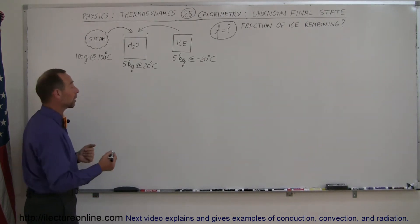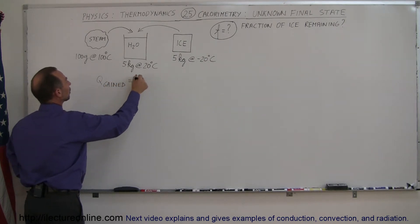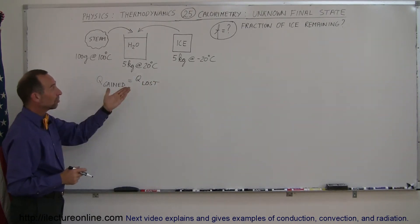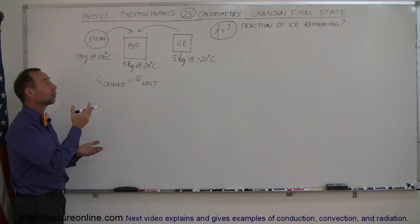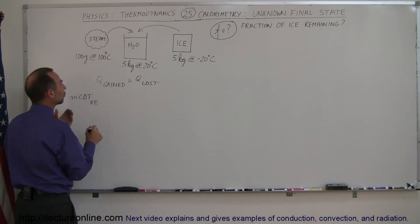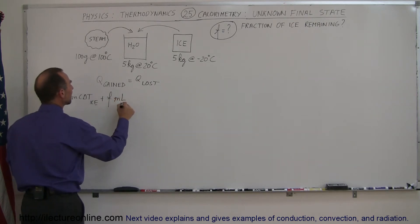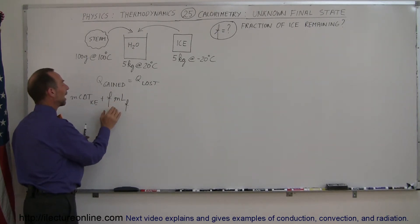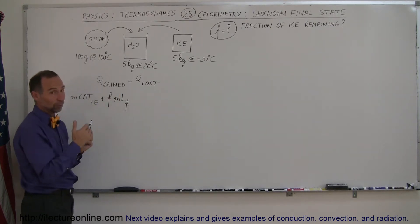Just like in every other calorimetry problem, we start by saying Q gained equals Q lost. What is gaining heat? The ice is gaining heat to get up to 0 degrees centigrade, and then part of the ice gains heat as it melts. So on the left side of the equation we have MC delta T for the ice going from minus 20 to 0, plus the fraction of the mass of ice that melts times the latent heat of fusion. Instead of ML_f, we have f times M times L_f, where f is a number between 0 and 1.